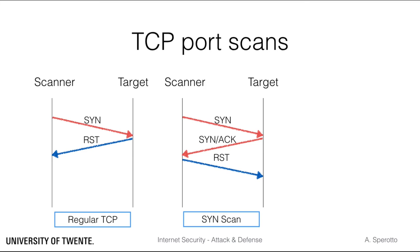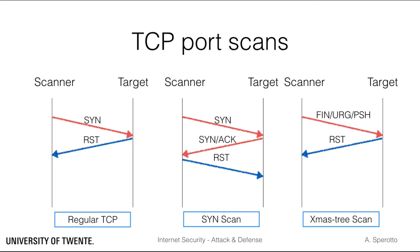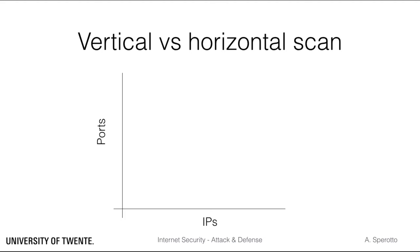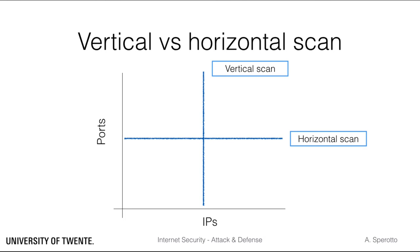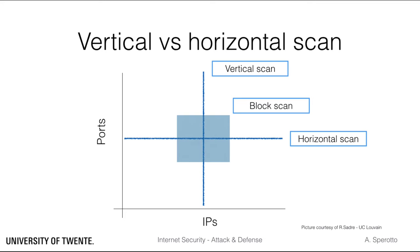A scanner can also try to engage a negative answer. For example, in a Christmas tree scan, the scanner sends a packet with FIN, URGENT, and PUSH flags set. The packet will trigger a RESET answer if the port is closed, or it will be ignored by the operating system if the port is open. When performing a scan, you can either search for a specific open port across a set of IPs — called a horizontal scan — or identify all open ports on a single host — called a vertical scan. Vertical and horizontal scans can also be combined in a block scan.